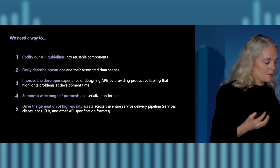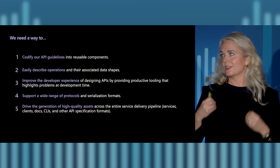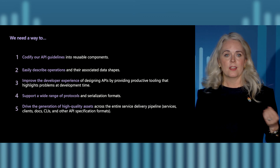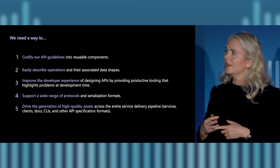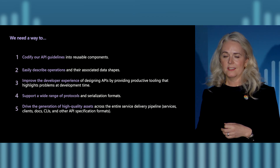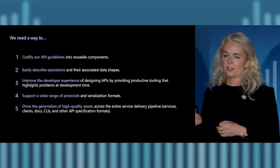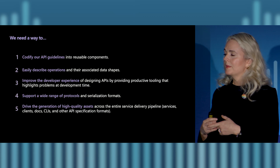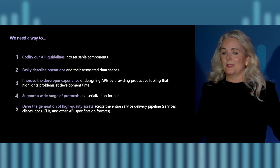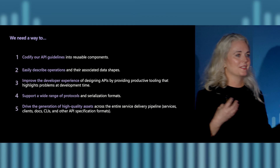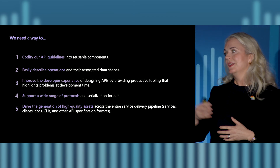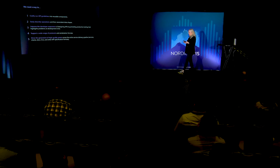So we spent time thinking about how we can approach some of these challenges. We decided we really wanted a way to be able to turn our API guidelines into reusable code, which could make it much easier and faster to adopt our API guidelines. We want to be able to easily describe our operations and data shapes. We are a team that builds tools, so we wanted to think about the developer experience of designing APIs. We need to support a wide range of protocols, and we want to connect into the great ecosystem of tools for driving things like docs, CLIs, and SDKs — everything that the OpenAPI spec brings.